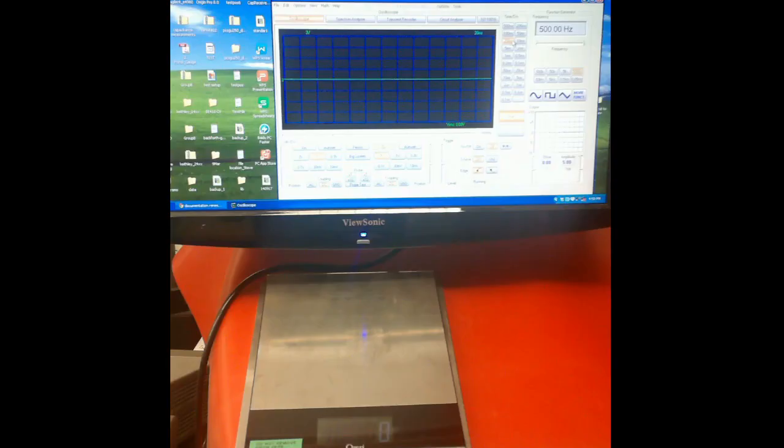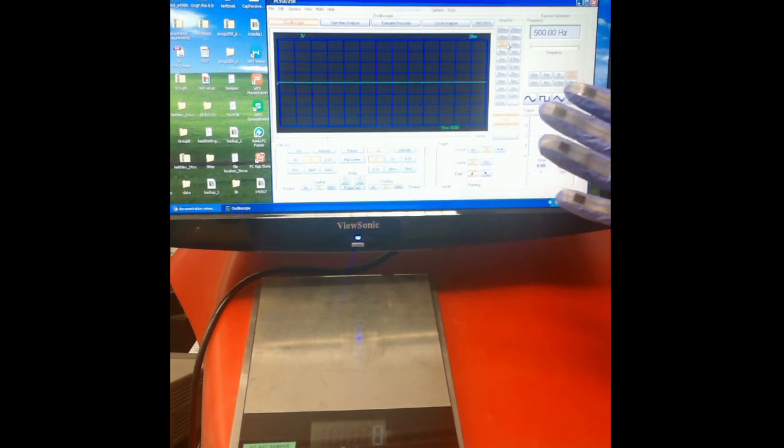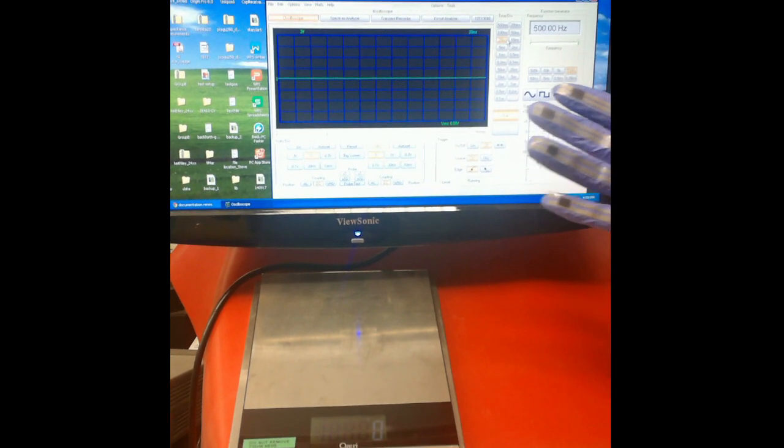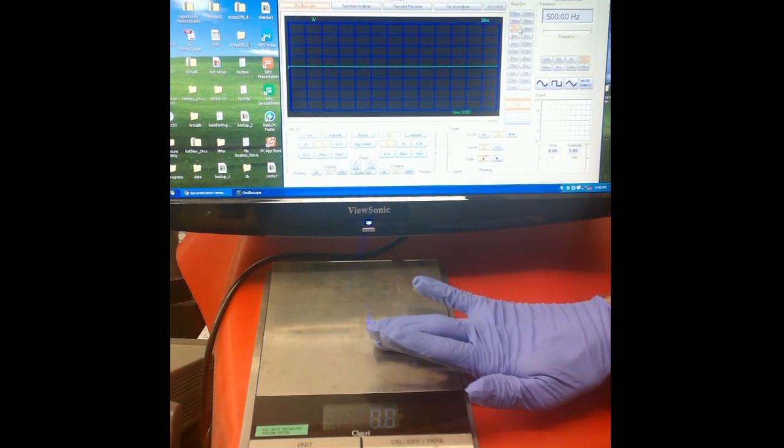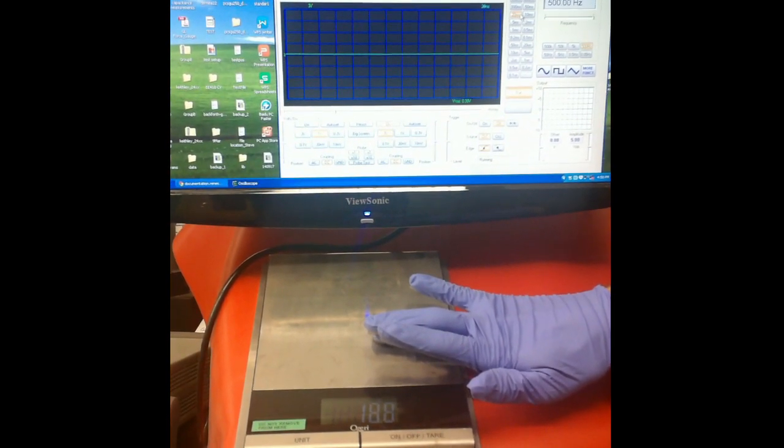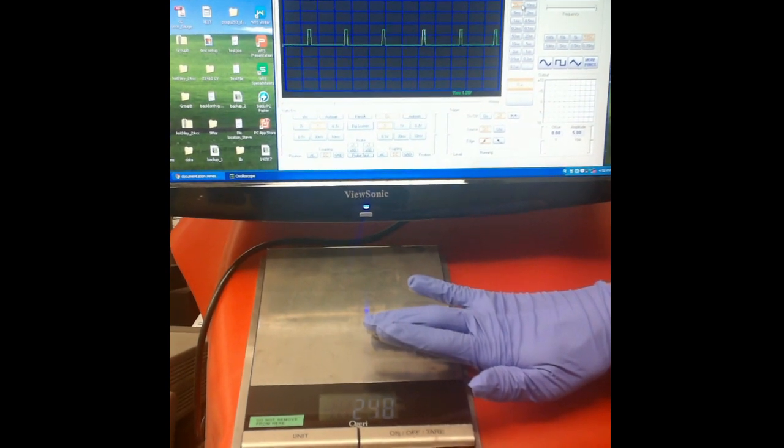Here we show the artificial mechanoreceptor in action. The pressure sensor is mounted on a glove. As the sensor is pressed against a scale, electrical pulses are produced. The frequency of these electrical pulses increases with the amount of pressure.